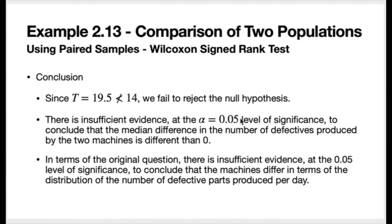Since 19.5 is not less than the critical point of 14, we fail to reject the null hypothesis. There is insufficient evidence at the 0.05 level of significance to conclude that the median difference in the number of defectives produced by the two machines is different than zero. There is insufficient evidence to conclude that the machines differ in terms of the distribution of defective parts produced per day.